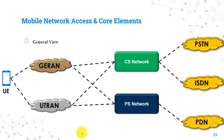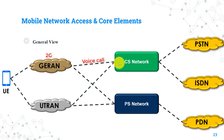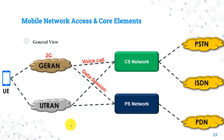Let's have a general look at a mobile network structure. The UE can be connected to the 3G or 2G networks. If in a 2G coverage area, it will connect first to the GERAN, which is the 2G radio access part. For a voice call, it connects to the CS circuit switching network, while for a data session, it connects to the PS packet switching network.